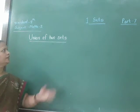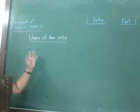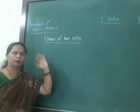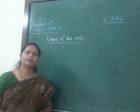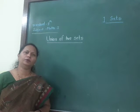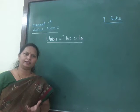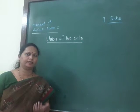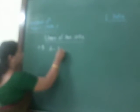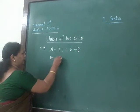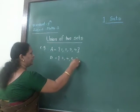Hello students. Now, sets part number 7. Next, operation of sets. We have already covered the concept of union of 2 sets. What is meant by union of 2 sets? That is, the set of all elements of 2 sets is called the union of 2 sets. For example, if set A contains the numbers 1, 2, 3 and 4, and set B contains the numbers 2, 4, 6 and 8.